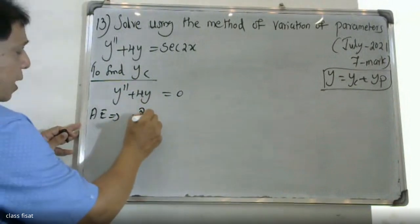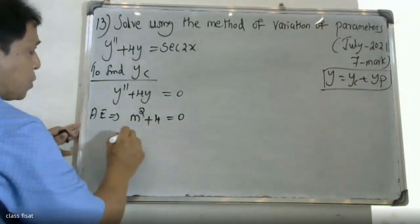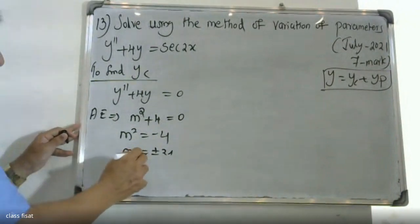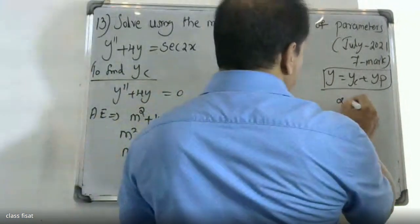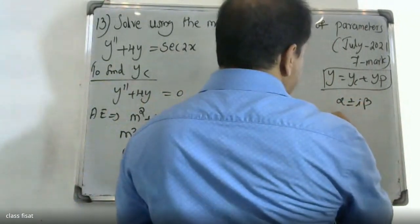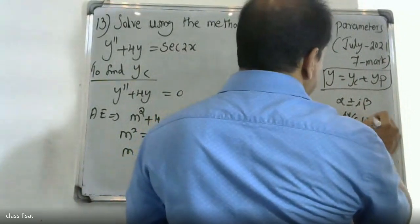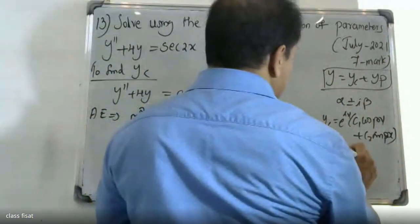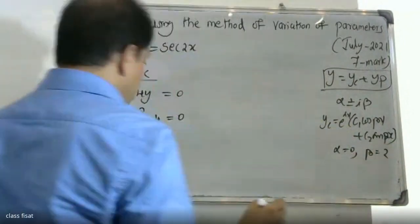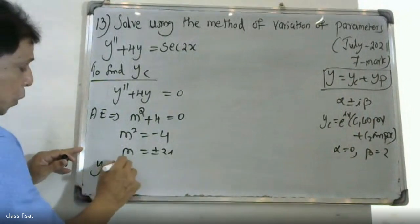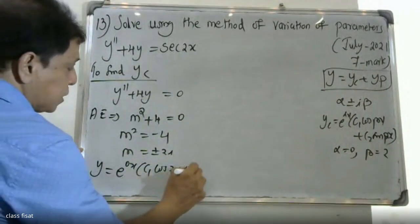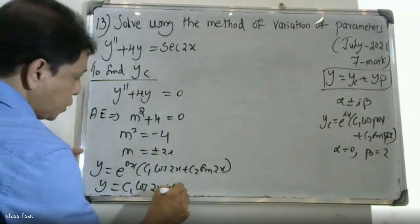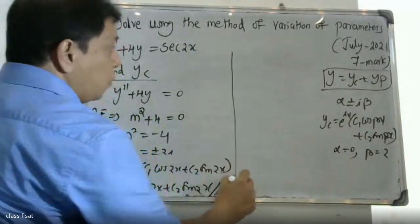The complementary function yc is equal to e raised to alpha x, c1 cos beta x plus c2 sin beta x. Finding alpha and beta: alpha is equal to 0 and beta is equal to 2. Therefore yc is equal to e raised to 0x, c1 cos 2x plus c2 sin 2x, which simplifies to yc equal to c1 cos 2x plus c2 sin 2x.